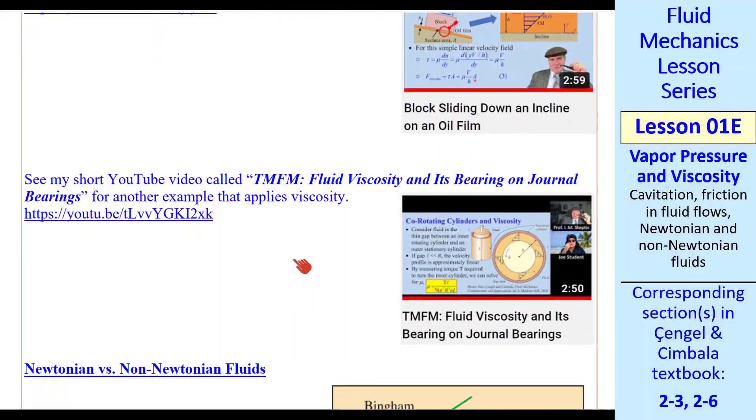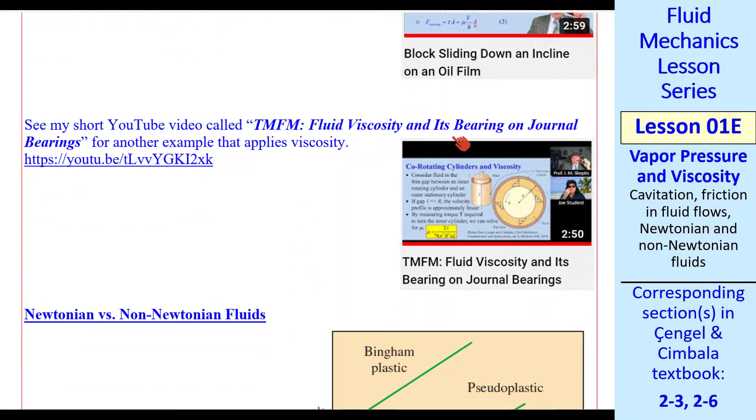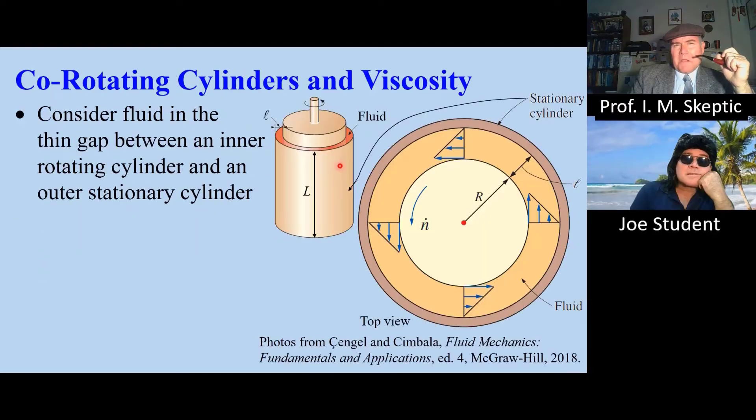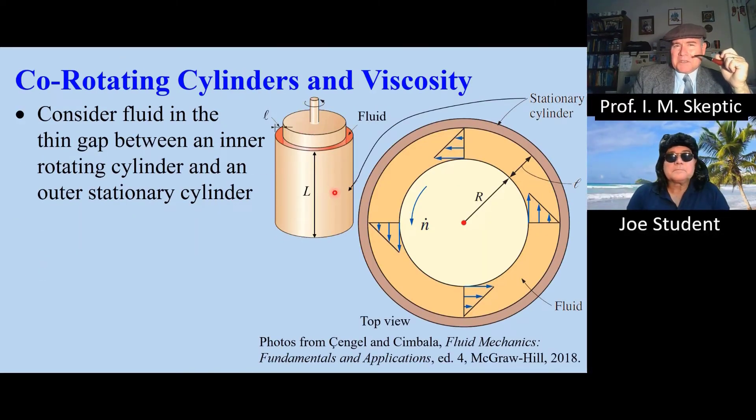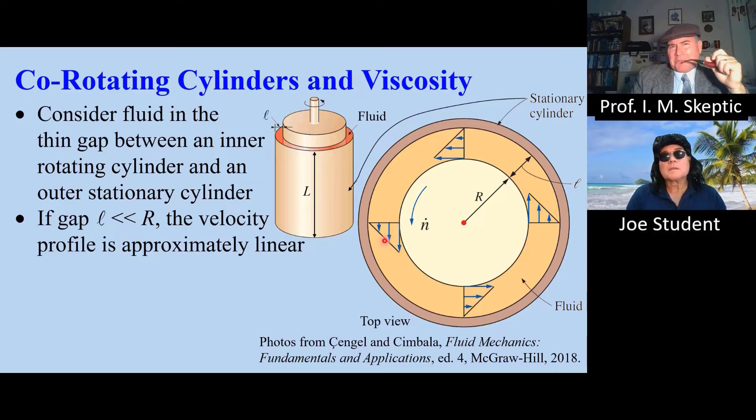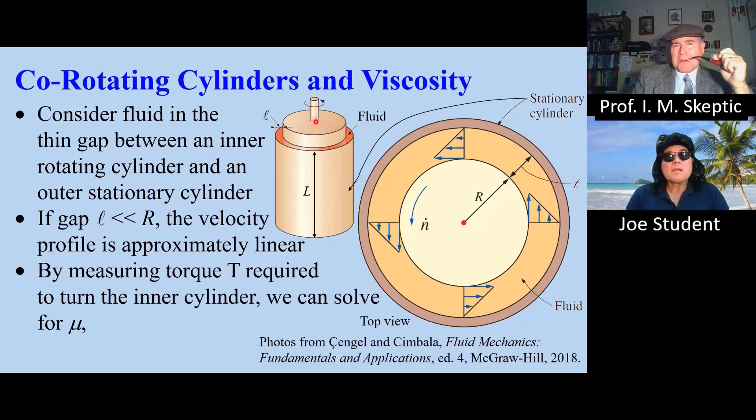I have another short video called Fluid Viscosity and its Bearing on Journal Bearings. I'll show some clips from that as well. Viscosity affects both normal and shear stresses. Now consider an axi-symmetric version of this. A rotating inner cylinder and a stationary outer cylinder with a gap of fluid in between. This is not to scale, but if the gap width is small, L much less than R, then the velocity profile is approximately linear, just like with the parallel plates.